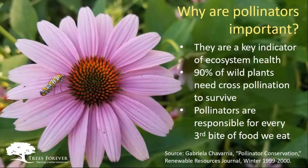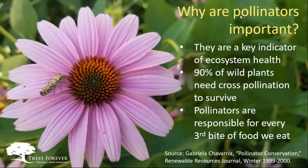Why are pollinators important, and why the concern over population declines the last couple of decades? The short answer is that pollinators are absolutely crucial to a healthy ecosystem and food supply. Pollinators are sometimes thought of as the canary in the coal mine and are a key indicator of ecosystem health. The reason is simple: 90% of wild plants need cross-pollination to survive and reproduce. When we put pollinators into the overall context of the food system, it's estimated that pollinators are responsible for roughly every third bite of food that we eat.